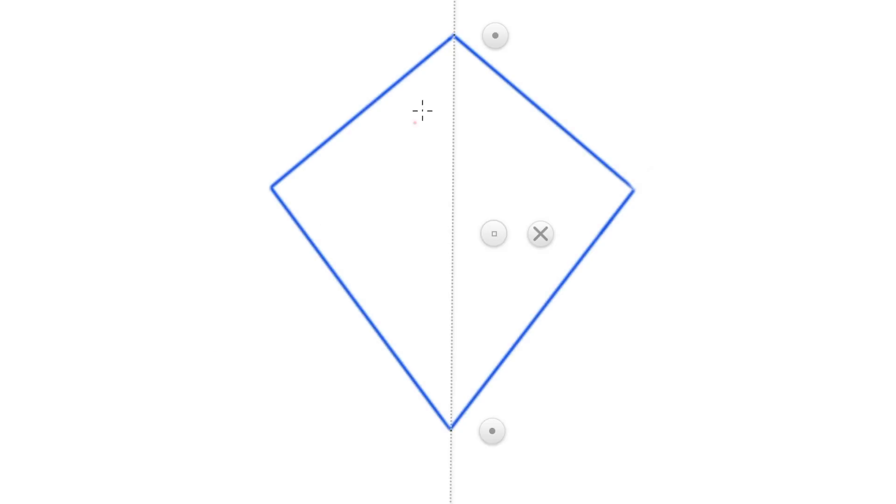A simple kite shape is only symmetrical down the centre, and it will feature no parallel lines, however, it will have one set of identical and opposite angles.